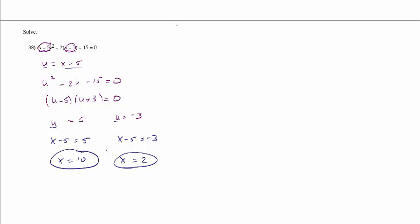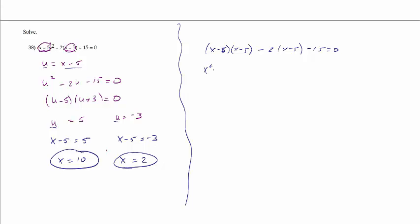So I have my two solutions. The nice thing about substitution — because this was a pretty simple example, but they can be much more complicated — substitution is a very nice way to go. An alternate method for this one here is, like I said, I could go ahead and multiply it out. So I have x minus 5 squared, which is x minus 5 times x minus 5. I got to FOIL that or use the formula. And then negative 2 times x minus 5 minus 15 equals 0.